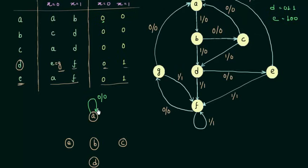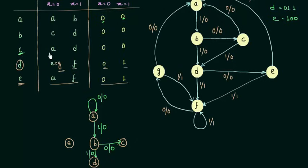When on state B with input 0 I go to C with output 0, and when input is 1 I go to D with output 0. When on state C with input 0 I go to A with output 0, and when input is 1 I go to D with output 0.